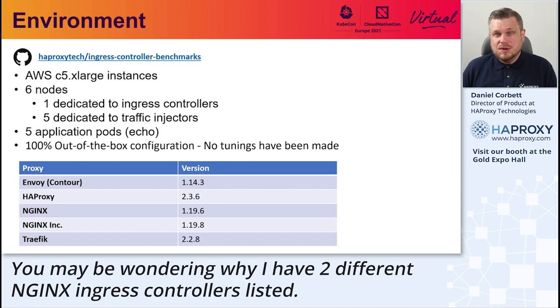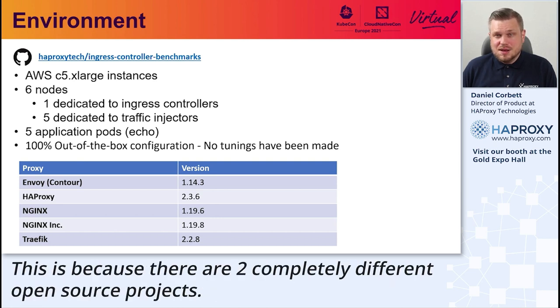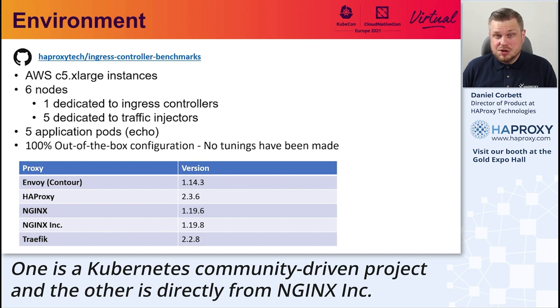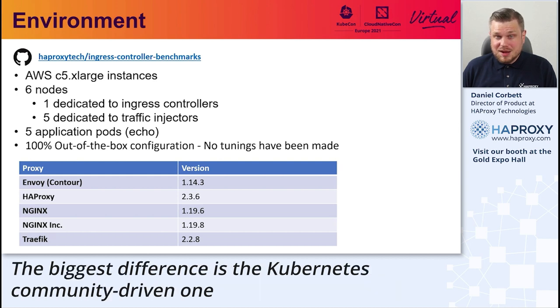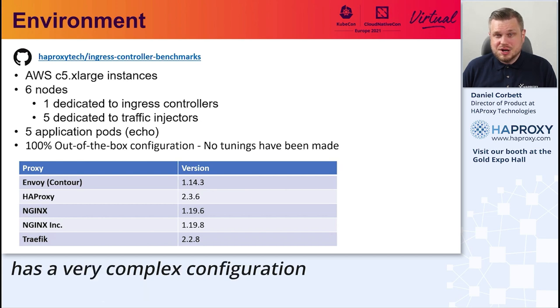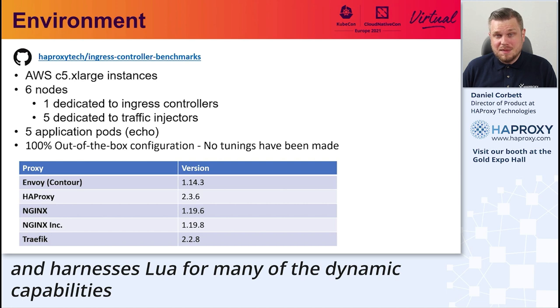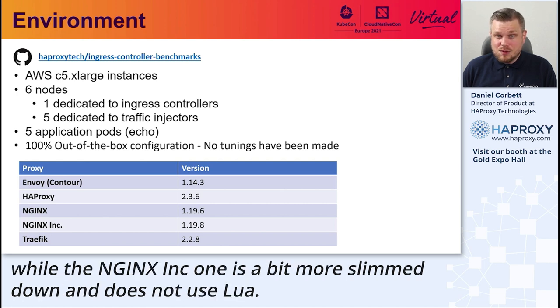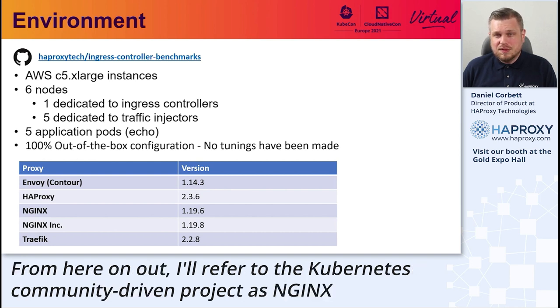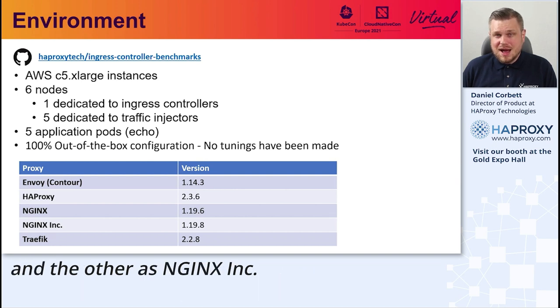You may be wondering why I have two different NGINX Ingress controllers listed. This is because there are two completely different open-source projects. One is a Kubernetes community-driven project, and the other is directly from NGINX Inc. The biggest difference is the Kubernetes community-driven one has a very complex configuration and harnesses Lua for many of the dynamic capabilities, while the NGINX Inc one is a bit more slimmed down and does not use Lua. From here on out, I'll refer to the Kubernetes community-driven project as NGINX, and the other as NGINX Inc.